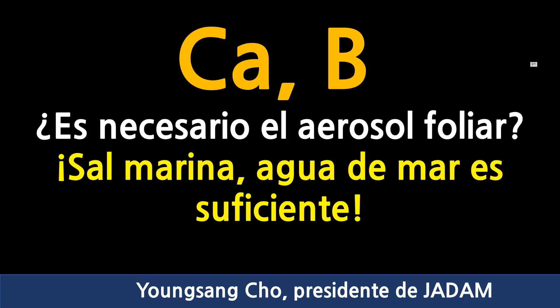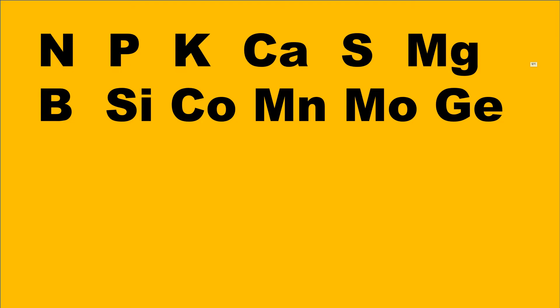A lot of people face confusion while studying agriculture because of nitrogen, phosphoric acid, potassium, calcium, sulfur, magnesium, boron, cobalt, manganese, molybdenum, germanium, and selenium, which are needed in farming. People often talk about balancing these elements to be a successful farmer. And today I'm going to talk about calcium and boron in this video.